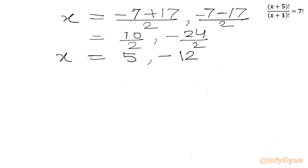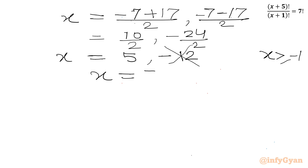The condition on x was that x must be greater than or equal to −1. Since −12 is less than −1, we reject it. So the only accepted value from this equation is x = 5.